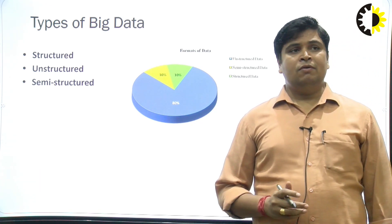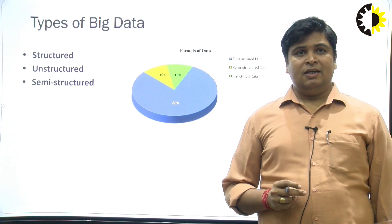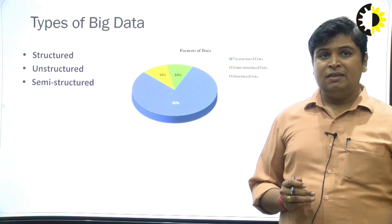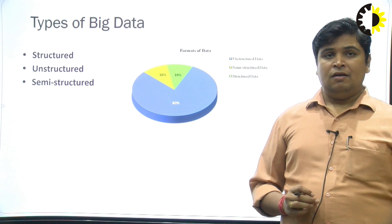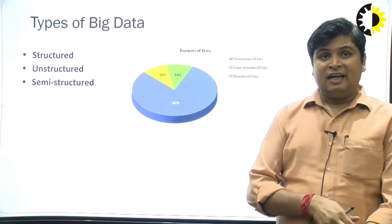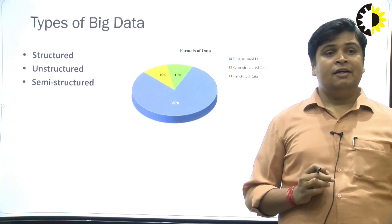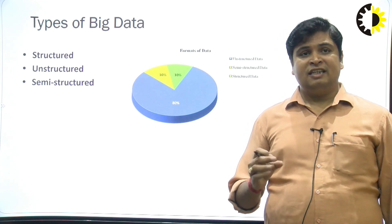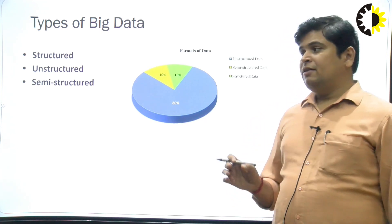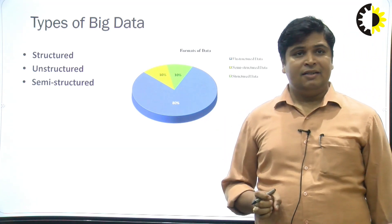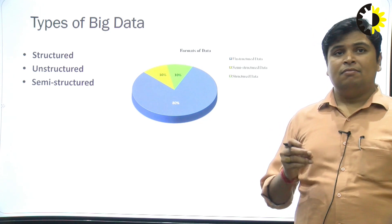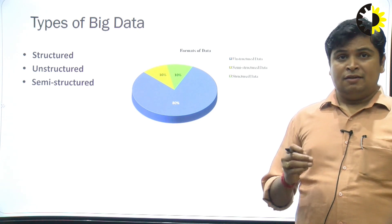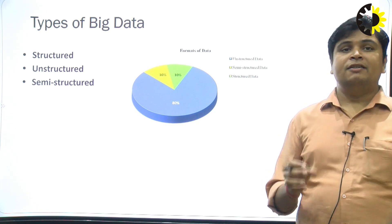If we are talking about big data, basically big data is a heterogeneous type — heterogeneous means different type. That data is categorized into three categories. The first one is structured, unstructured, and semi-structured. But as you can see in this figure, the maximum amount of big data generated by end users is unstructured data.